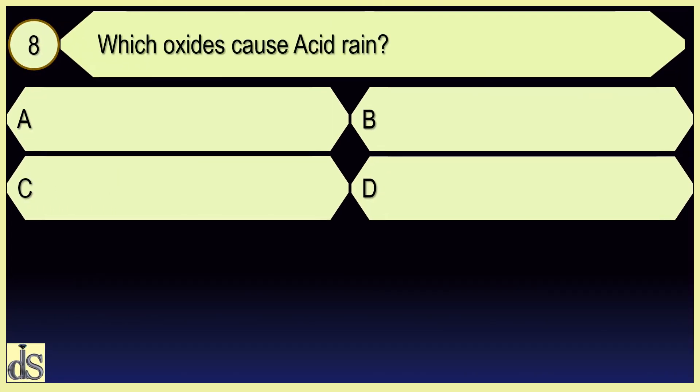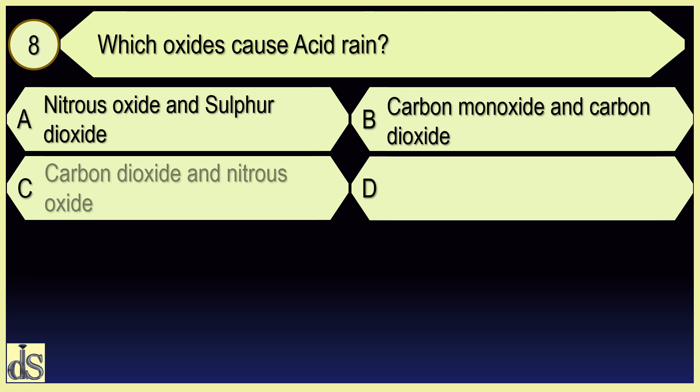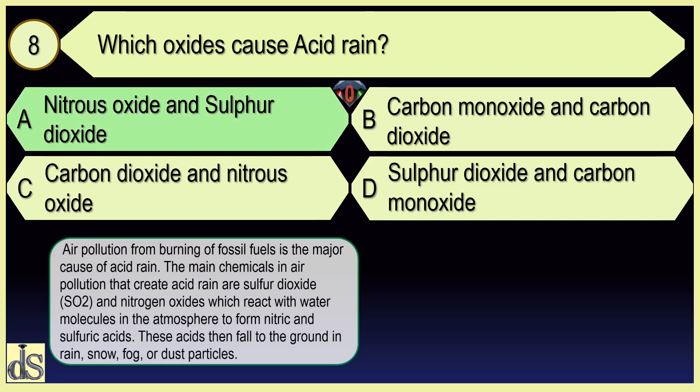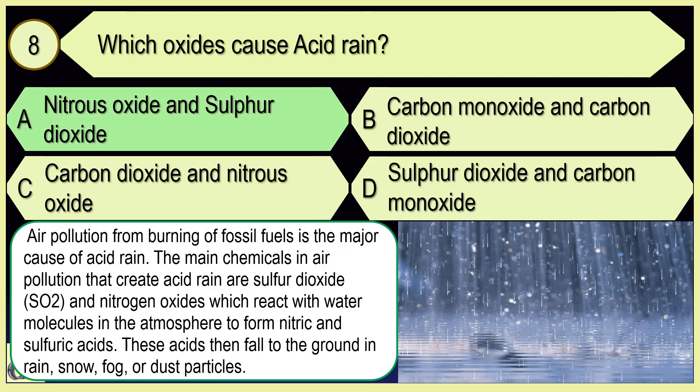Which oxides cause acid rain? Nitrous oxide and sulphur dioxide.